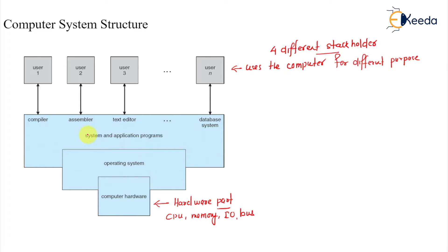Then you have the next layer. You can think of this as a layer where you have system and application programs. System programs and application programs is the next one. You have all the applications over here. Here comes the operating system. The third layer is operating system.